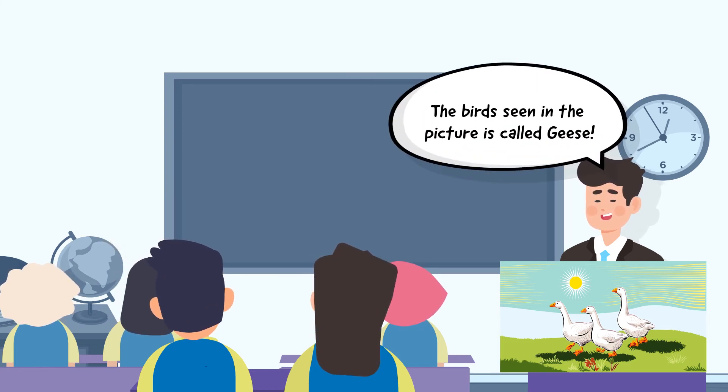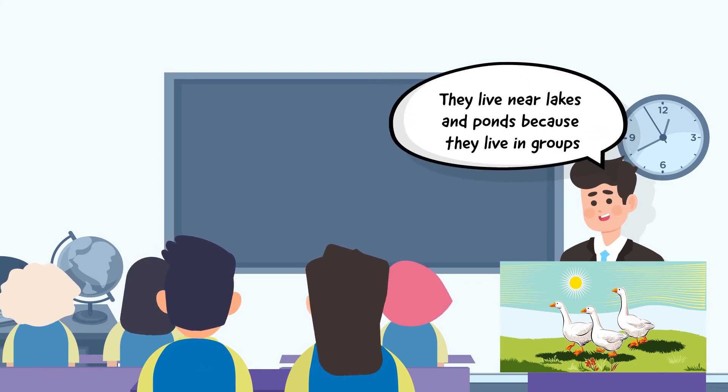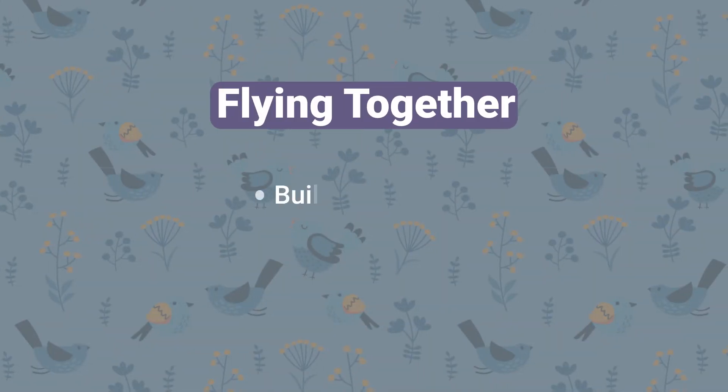Following the responses, inform the students that the birds seen in the picture are called geese and they live near lakes and ponds because they live in groups. Now the students are well aware of what geese are and thus we have built the theme of the lesson.